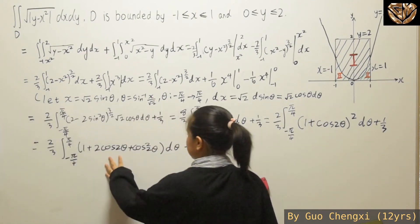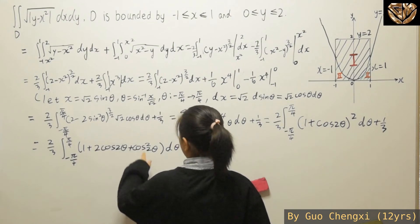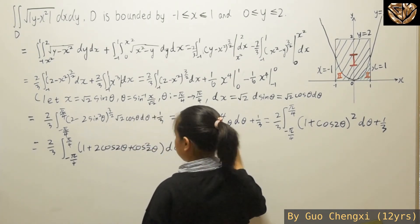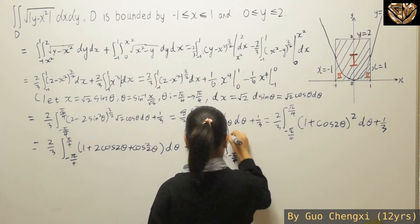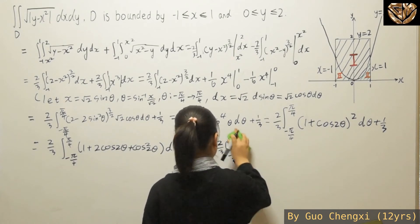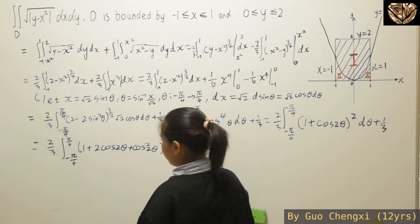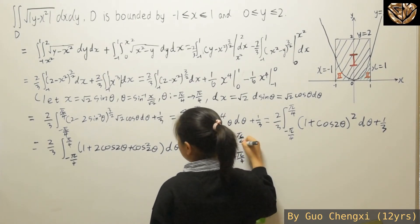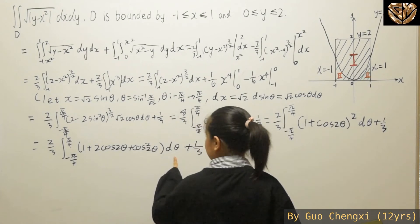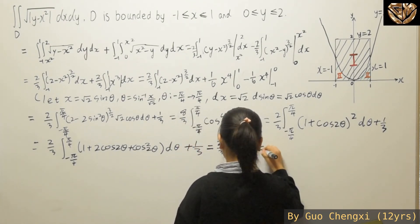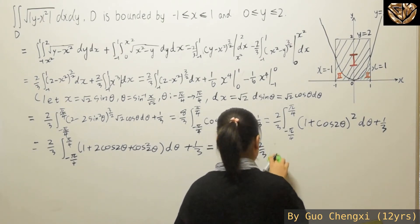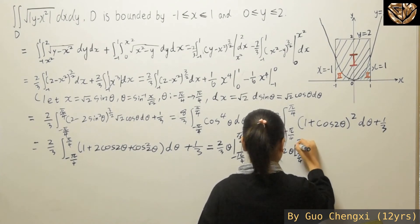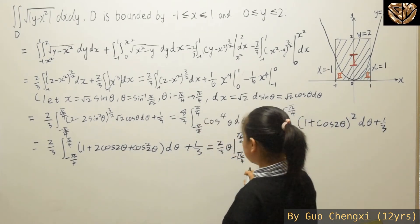Now we can expand and integrate these parts. We separate this into three different portions. We have 2 over 3, integral from negative pi over 4 to pi over 4. For the theta term, we can integrate it directly. What we get is theta from negative pi over 4 to pi over 4. Then we also have plus 2, where the 2 can be moved inside to match out the cosine 2 theta, giving 2 over 3 times sine 2 theta from negative pi over 4 to pi over 4.